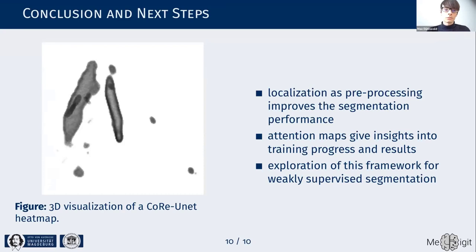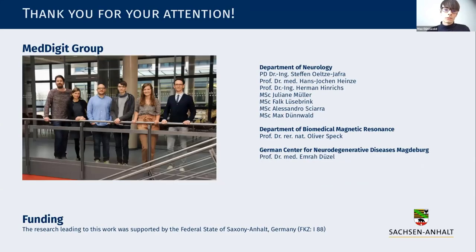The heatmaps help ensure that the network is actually learning what we expect it to learn. During our investigation, we found that the heatmaps don't just collapse to a sphere around the center of mass target being regressed — rather, the locus ceruleus structure itself appears to be highlighted quite well. Currently we are investigating this localizer as a framework for weakly supervised segmentation as well. This concludes my talk — thank you for your attention.